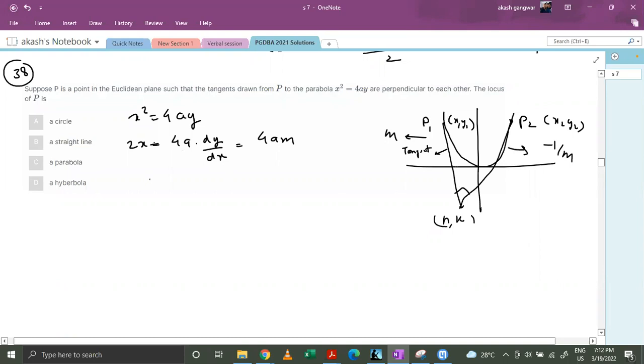So basically x1 equals to 2am and y1 equals to, let's plug in this value over here. Basically 2am whole square by 4a which is nothing but 4a square m square by 4a. This comes out to be am square.